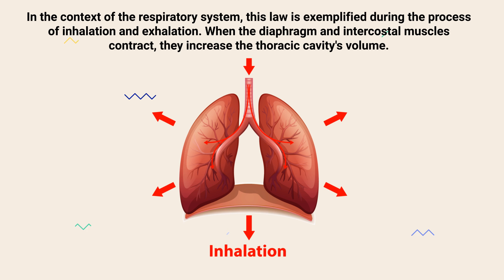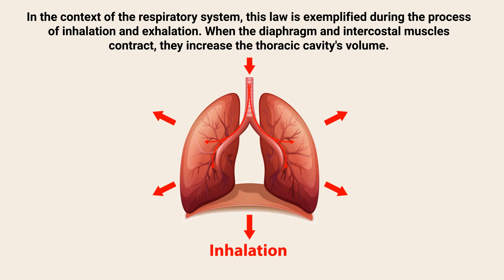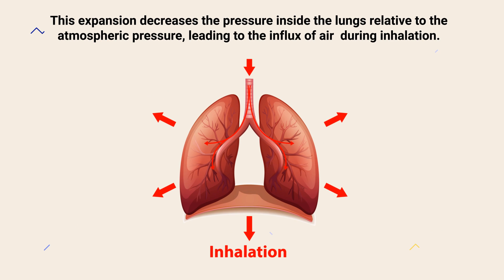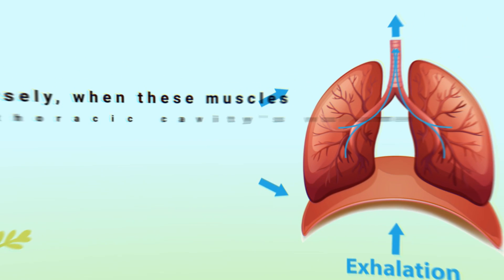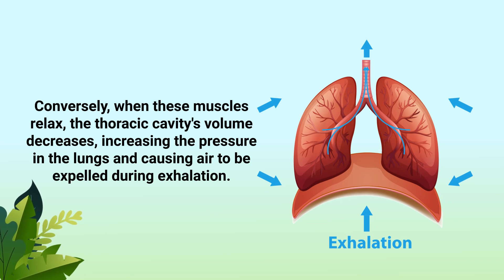When the diaphragm and intercostal muscles contract, they increase the thoracic cavity's volume. This expansion decreases the pressure inside the lungs relative to the atmospheric pressure, leading to the influx of air during inhalation.